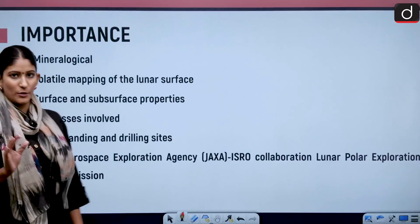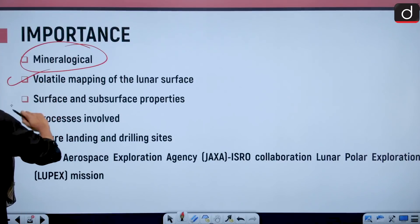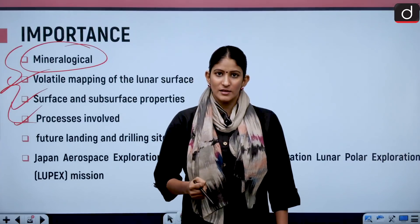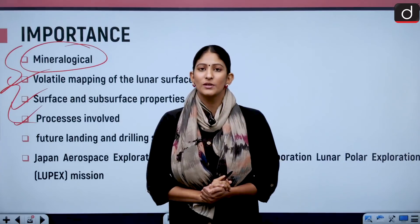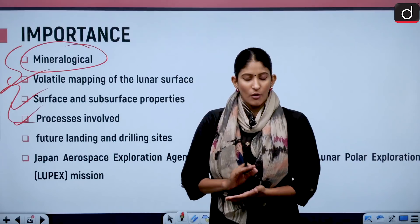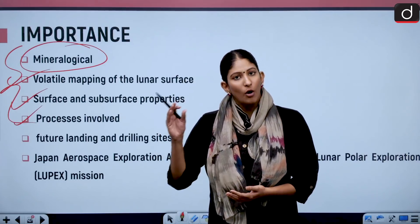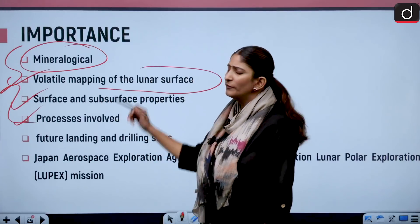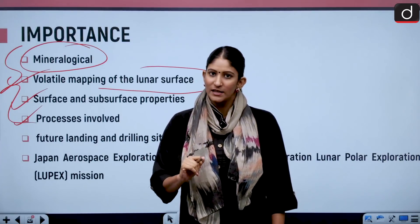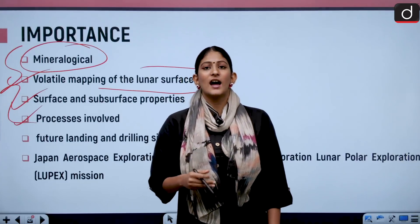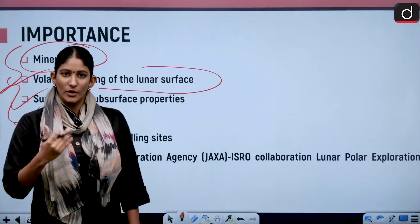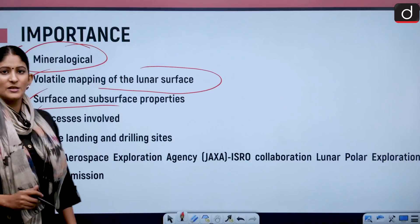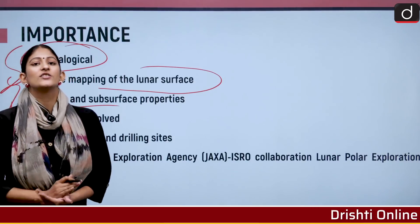The importance of these findings goes through four processes. First is mineralogical — what minerals and elements are present on the moon that are scarce on earth. Second, what is the history of the solar system — if we find similar elements on earth and on different celestial bodies, we can build a linked history. Third is volatile mapping of the lunar surface, to know how hospitable the terrain is for sustainable future experimentation, as NASA's Artemis mission aims for a sustainable lunar exploration by 2028. Fourth is surface and subsurface properties — understanding the basic nature of the moon.